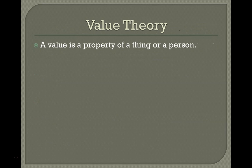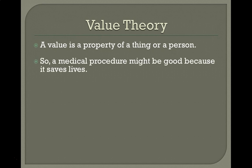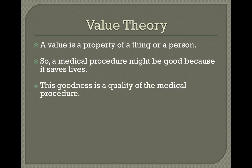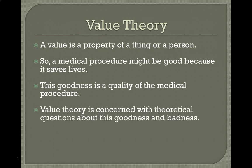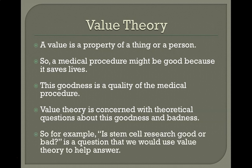When we're thinking about value theory, a value is a property of a thing or a person. So a medical procedure might be good because it saves lives, and this goodness is a quality of the medical procedure. Value theory is concerned with theoretical questions about this goodness and badness. For example, whether stem cell research is good or bad is a question that we would use value theory to help us answer.